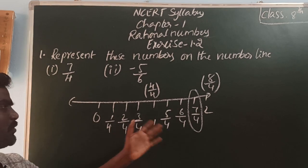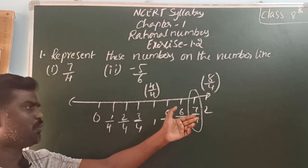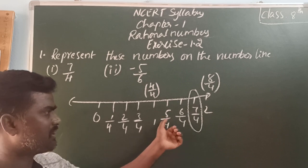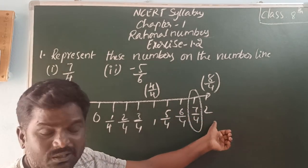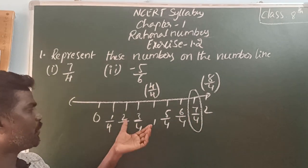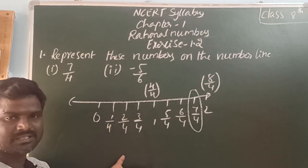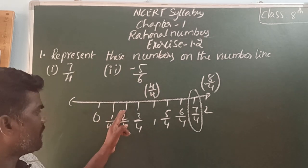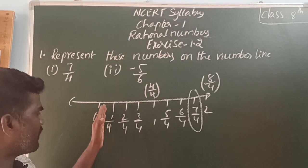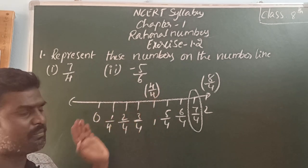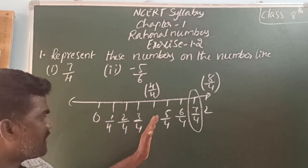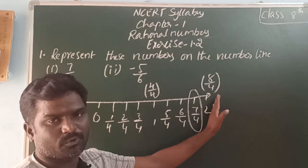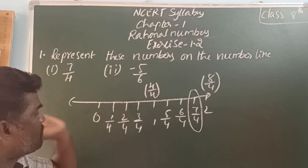Since 7 by 4 is greater than 1, we take two intervals: 0 to 1 and 1 to 2, with the same distance. We divide 0 to 1 into 4 equal parts. Each part is 1 by 4. So the marks are 1 by 4, 2 by 4, 3 by 4, 4 by 4, then 5 by 4, 6 by 4, and 7 by 4 — this is where we plot the number. Next is 8 by 4.